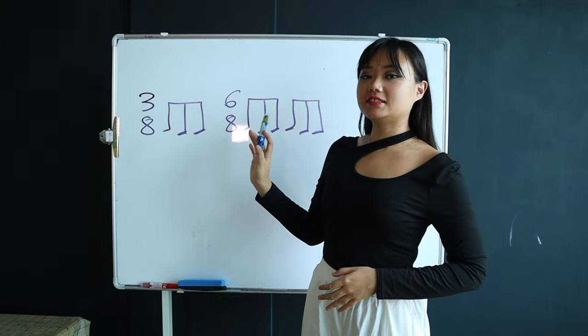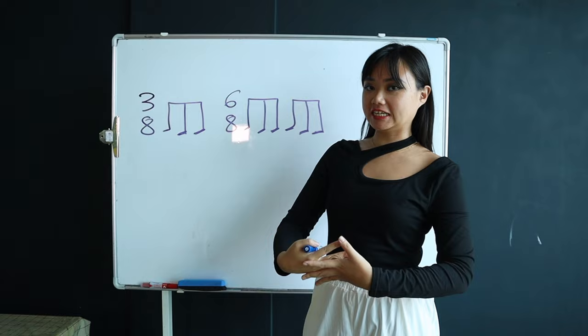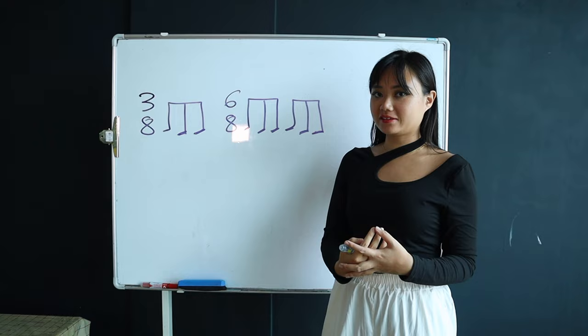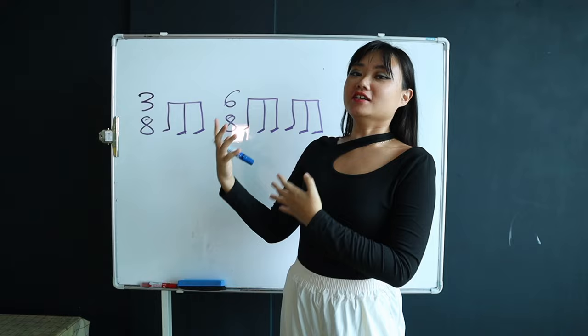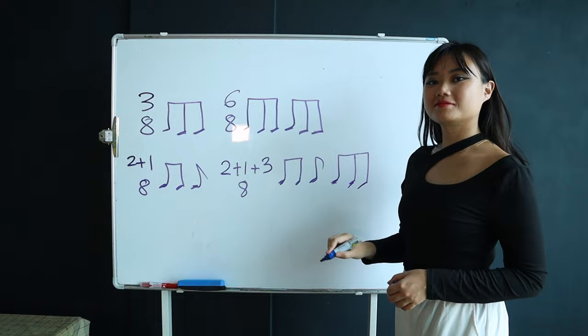There are several ways that these time signatures are grouped. The first one being three eighth notes beamed together. In 6-8, usually, there are two pairs of three eighth notes beamed together. So, if you'd like to group them in a different way, you would have to do something like this. If you check them all, they should add equal to the time signatures above.